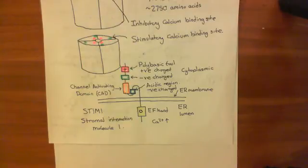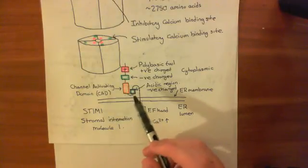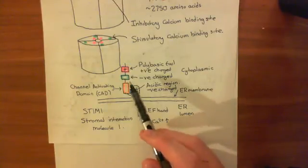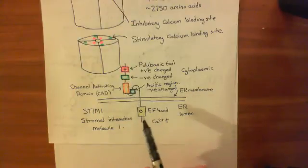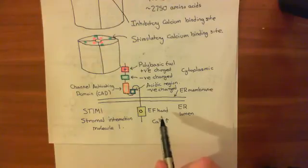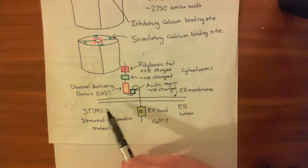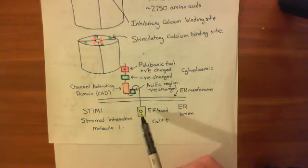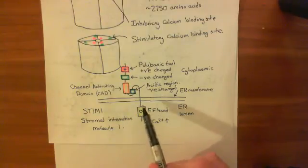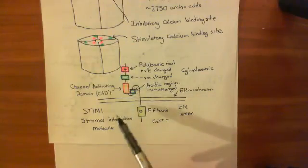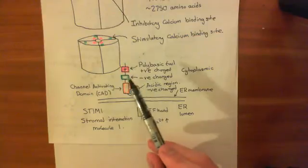What we have in the endoplasmic reticulum is a protein known as STIM1, standing for stromal interaction molecule 1. This protein has on its ER lumen domain an EF-hand domain, which binds calcium. When the calcium concentration is at the correct level in the ER lumen, calcium is bound to the EF-hand domain of the STIM1 protein, and STIM1 is in its inactive conformation.